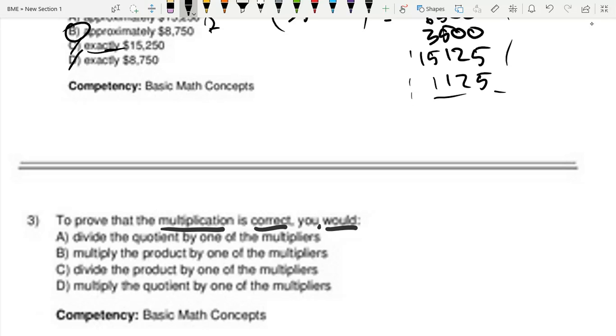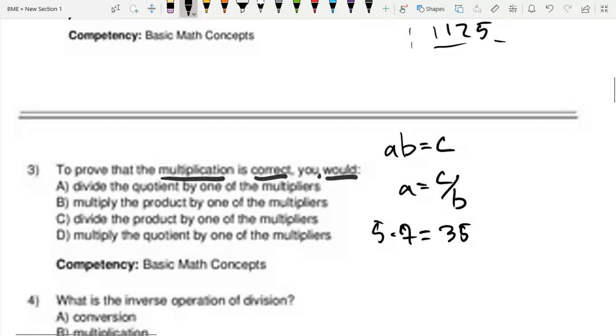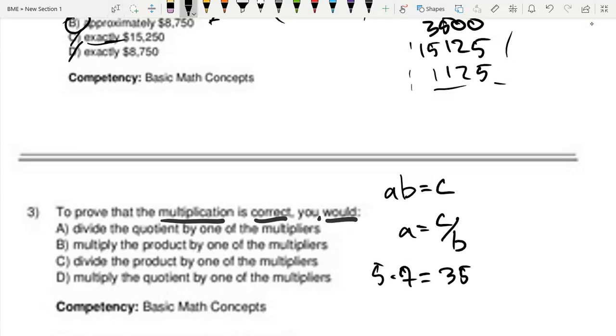To prove that multiplication is correct in an algebraic sense, we can do A times B equals C. Now to prove that it's correct, we can do A equals C over B. This is the same thing as saying 5 times 7 equals 35. To check if this is correct, I can do 7 equals 35 over 5.